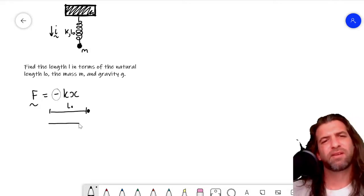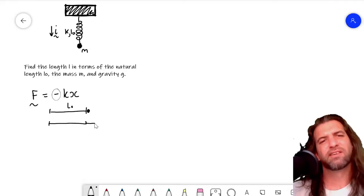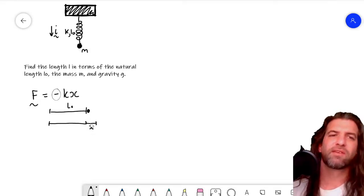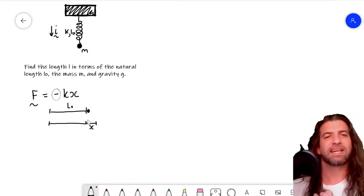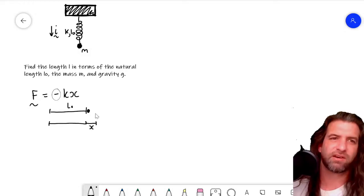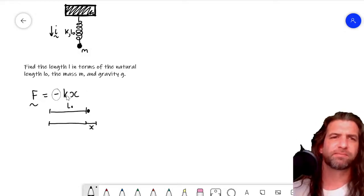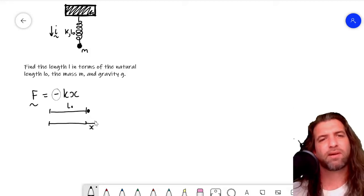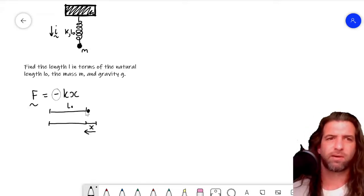But what happens if we extend it in this direction? Well, we've extended the spring in the positive x direction. So if we put that back into the formula here and we've got a positive x, so the force is negative. So if we've pulled out a spring this way, then the force of the spring is going to be acting that way. And that's quite intuitive.